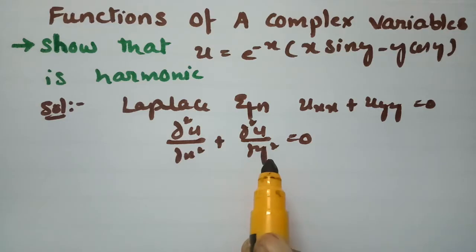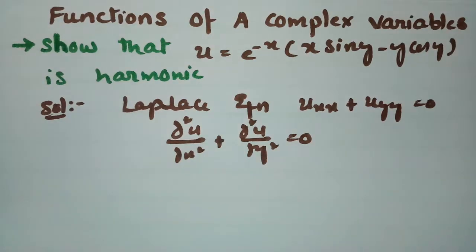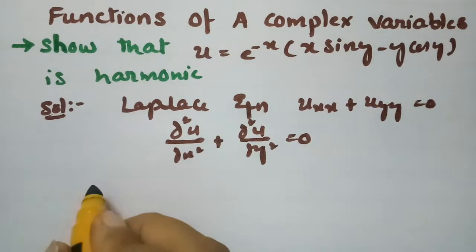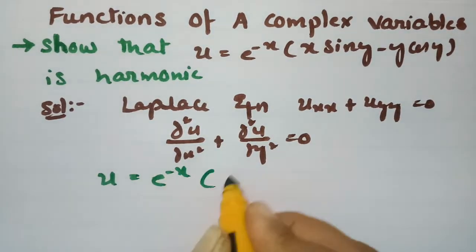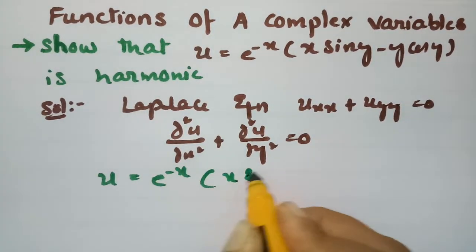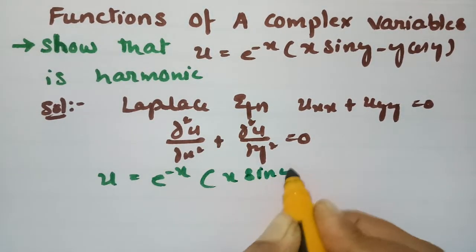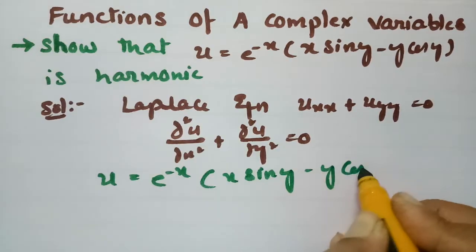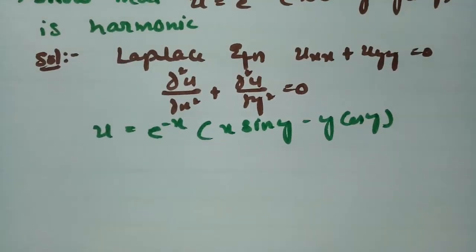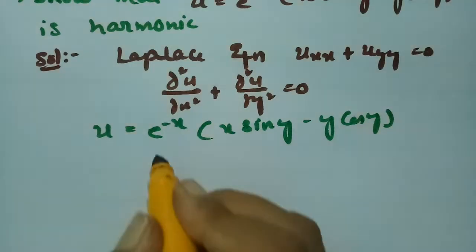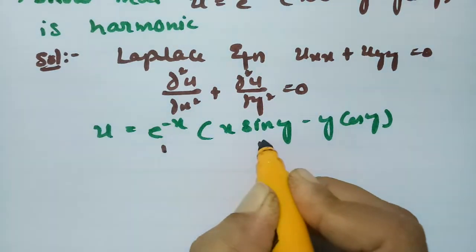If u satisfies this equation then we say that u is harmonic. Let's test for that. Here u is equal to e^(-x) times (x·sin(y) − y·cos(y)). First of all I have to make a derivative with respect to x, treating the first and second functions accordingly.